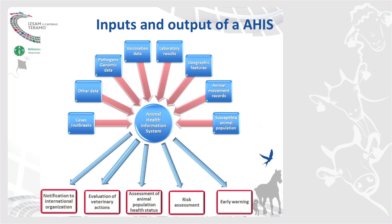Today, for example, data on genomics — on the genome of pathogens — is increasingly important, not only viruses but also bacteria, if you consider food safety problems. These are the possible main outputs of the animal health information system: satisfying international obligations, evaluation and better planning of veterinary actions, assessment of animal population status, health certification, risk assessment, and early warning in case of health emergencies.